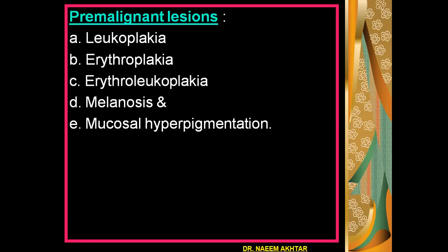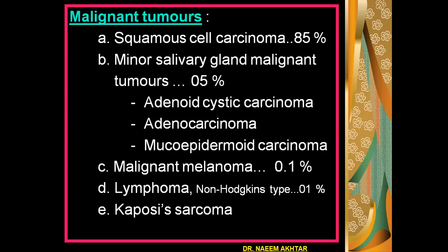The pre-malignant lesions which occur in the oral cavity are leukoplakia, erythroleukoplakia, melanosis, and mucosal hyperpigmentation. Among the malignant tumors, number one is squamous cell carcinoma — this is the most commonly occurring malignant tumor in the oral cavity, around about 85 percent. Others include minor salivary gland malignant tumors at only 5 percent, for example adenoid cystic carcinoma, adenocarcinoma, and mucoepidermoid carcinoma. Other malignant tumors are malignant melanoma with an incidence of only 0.1 percent, lymphoma especially the non-Hodgkin's type at around 1 percent, and Kaposi's sarcoma.